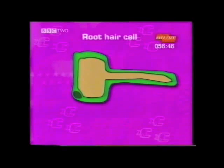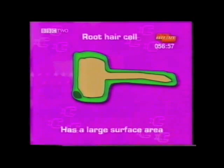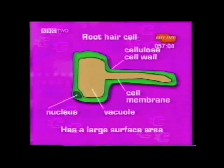A diagram of a root hair cell looks like this. It is adapted to have a large surface area for the absorption of water and mineral salts. But remember, it is like a plant cell you're familiar with — it has a nucleus, vacuole, cellulose cell wall, and a cell membrane. Remember to take time to label your diagrams.